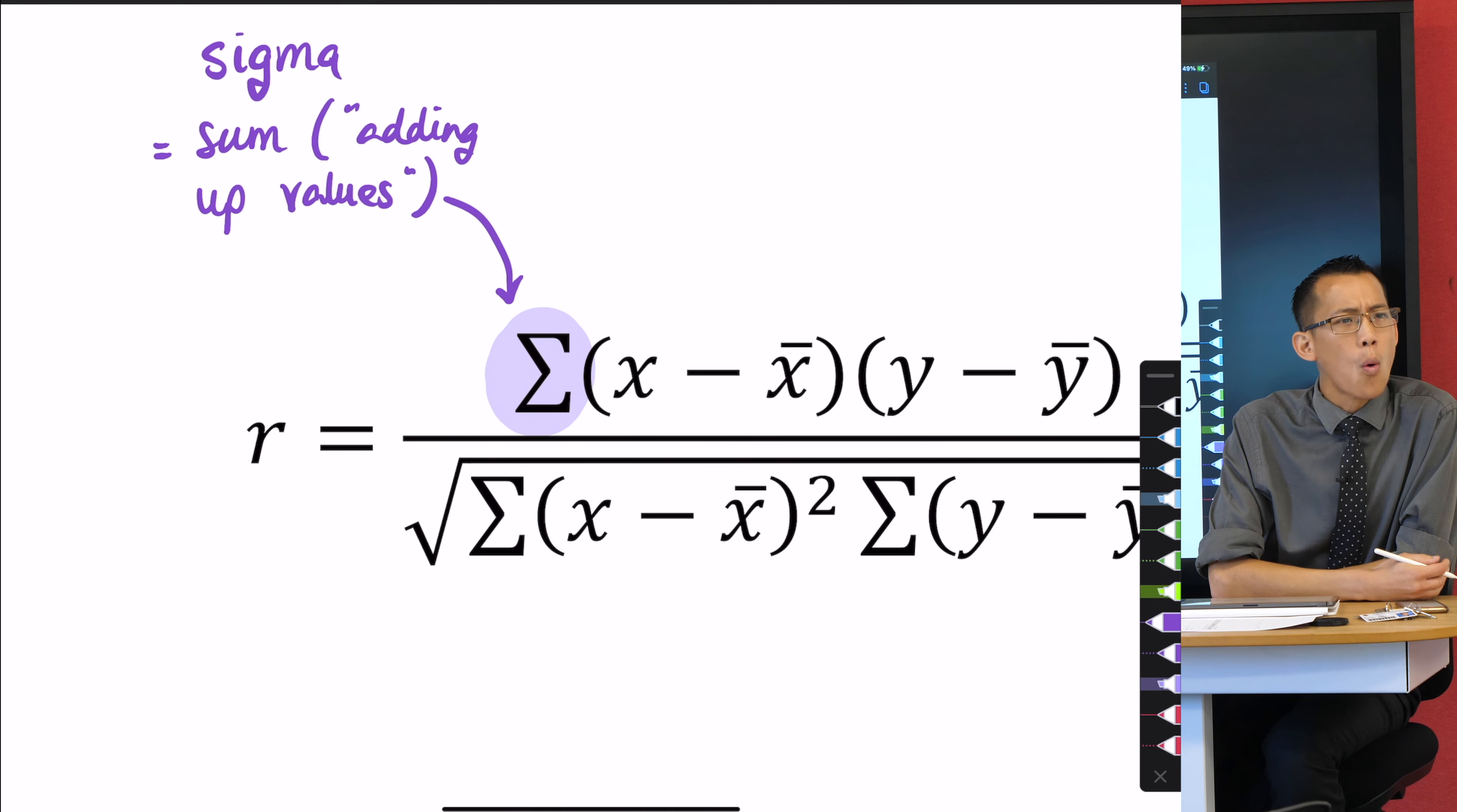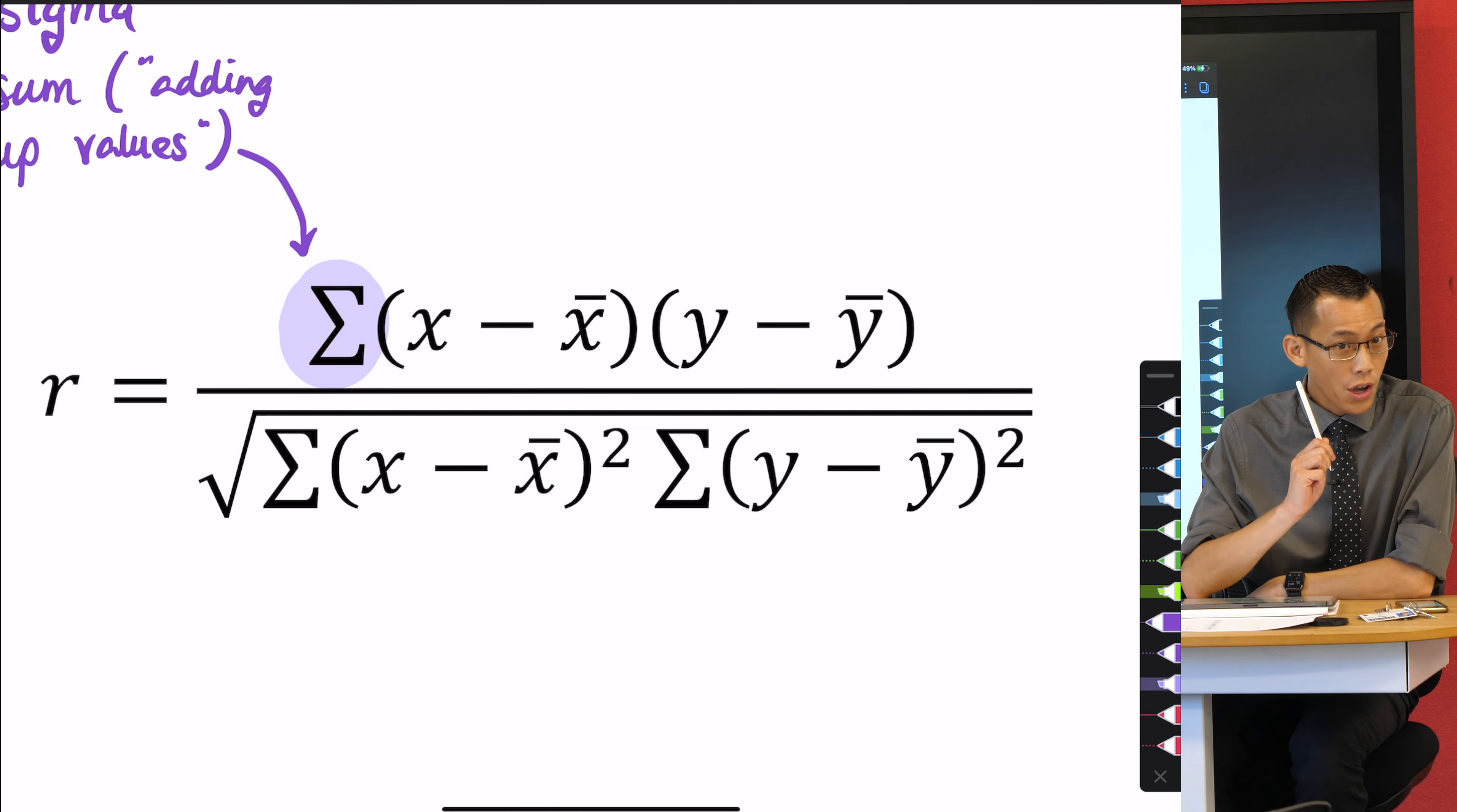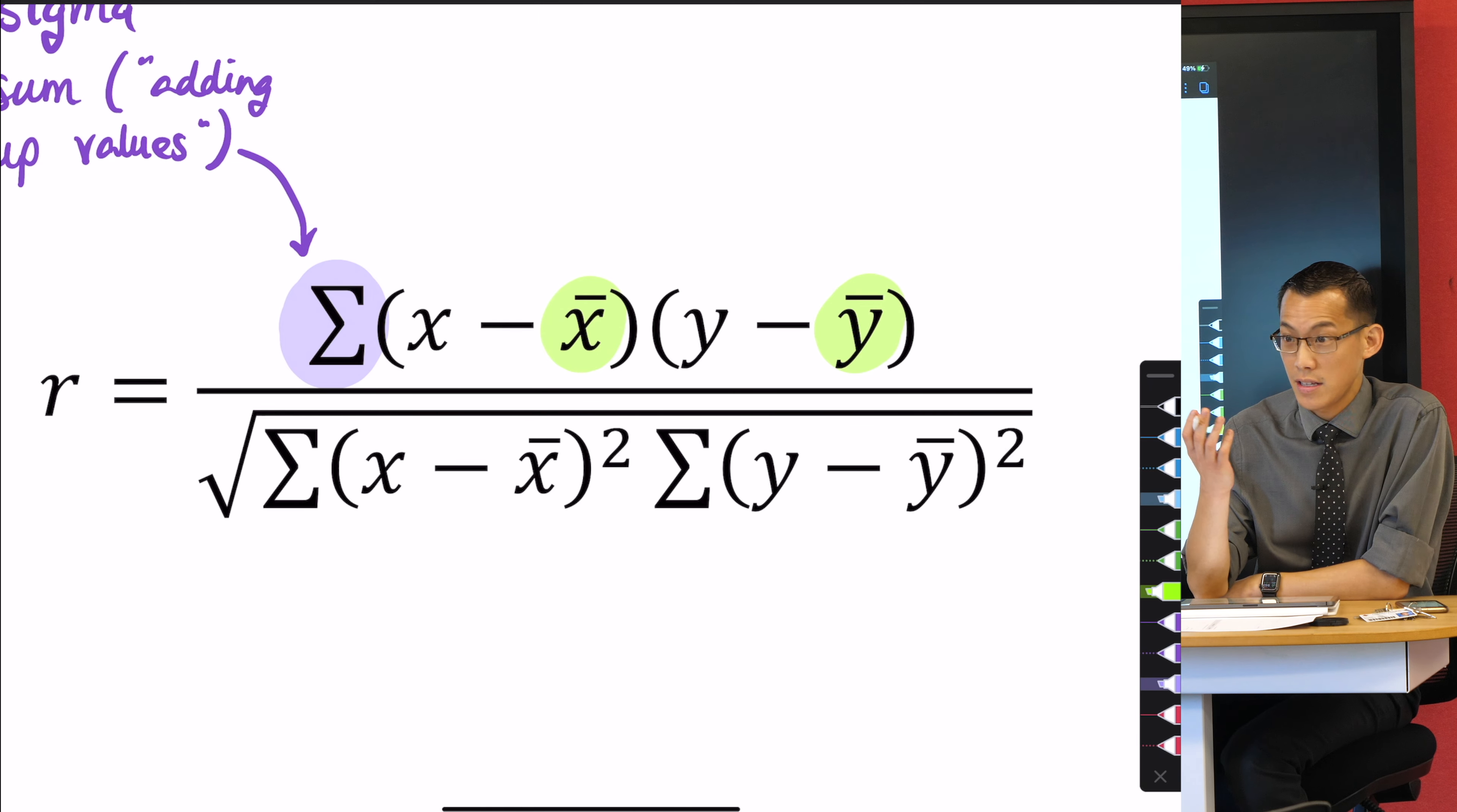This formula is the addition of a lot of different things. What is it adding? Let's look over here on the right hand side. You can see a bunch of notation with these bars over the top. You've encountered this before—when you see x̄, that means the mean.